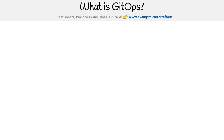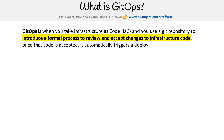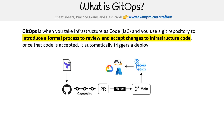Hey, this is Andrew Brown from Exam Pro. We are taking a look at the concept or methodology of GitOps. This is when you take infrastructure as code and use a Git repository to introduce a formal process to review and accept changes to infrastructure code. Once that code is accepted, it automatically triggers a deploy and changes that infrastructure. Here's my illustration to walk through it.